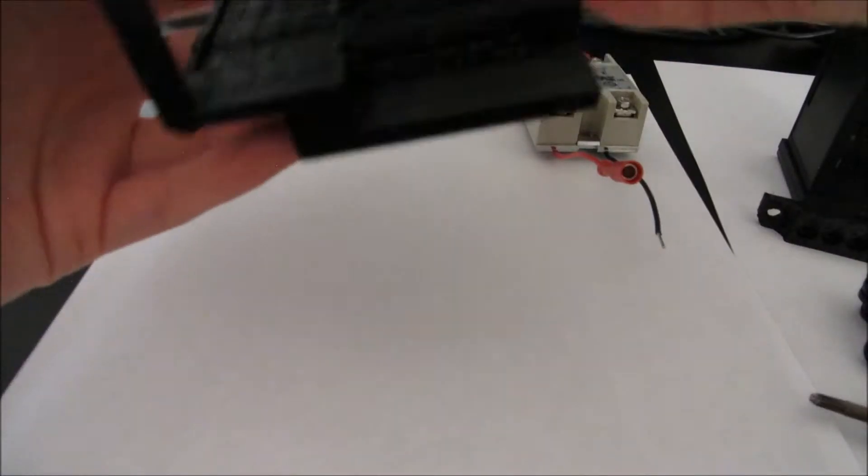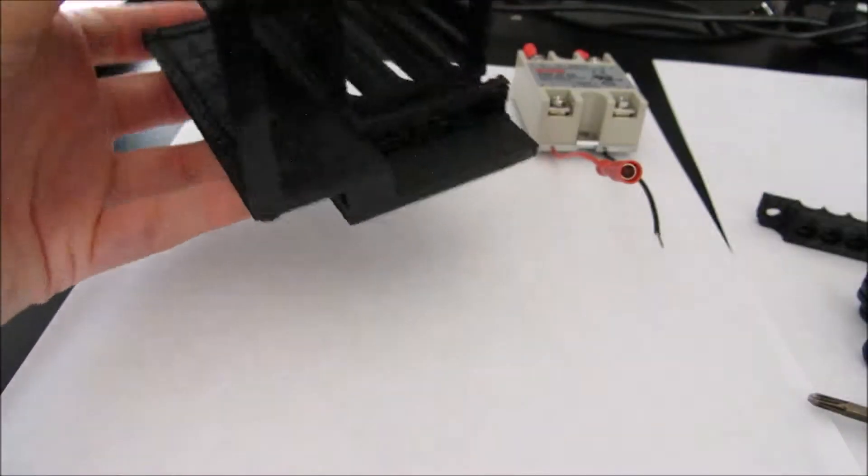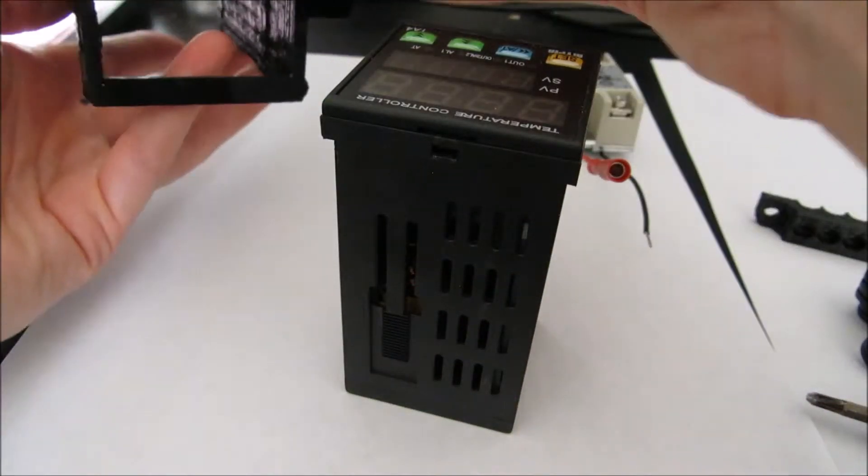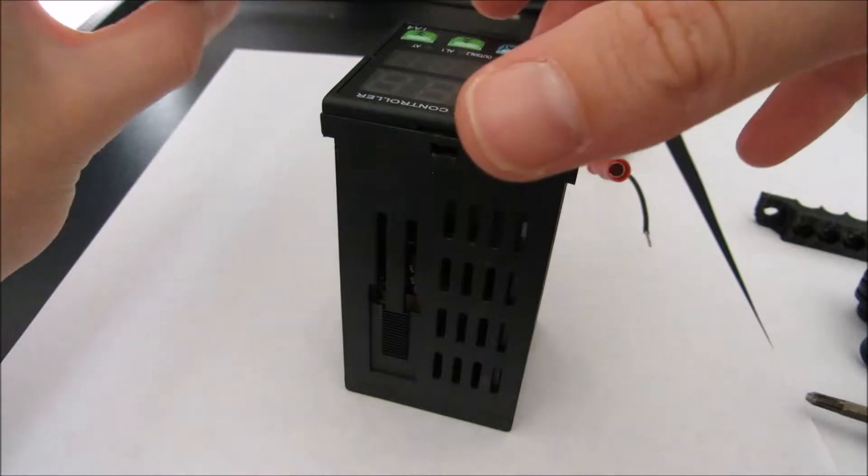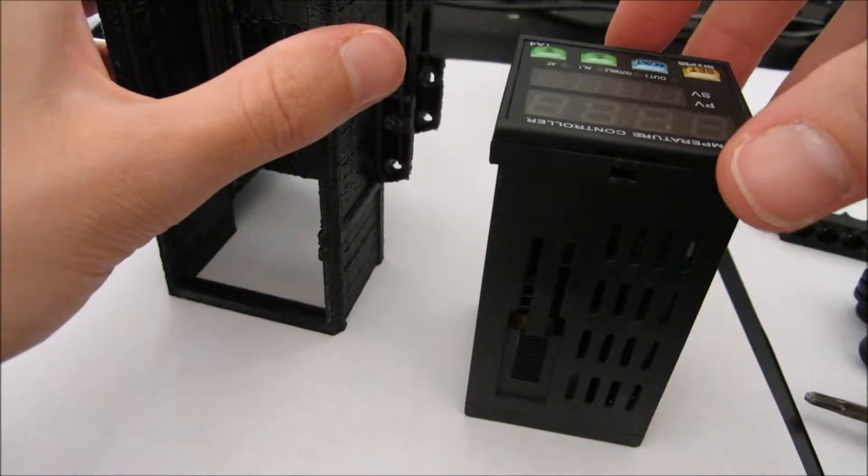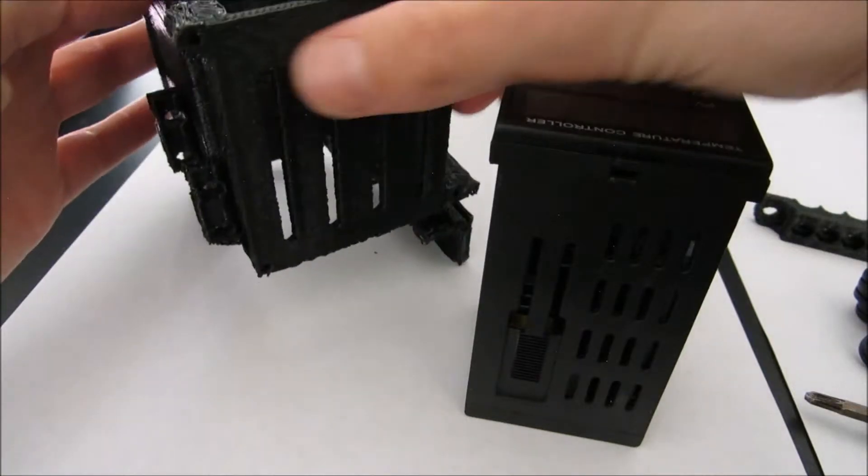To set up the PID, we have our box here and our PID controller here. You'll see that we're going to need to slide this in. You can see where it is positioned, like so.